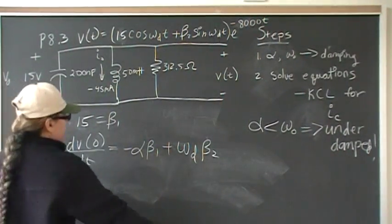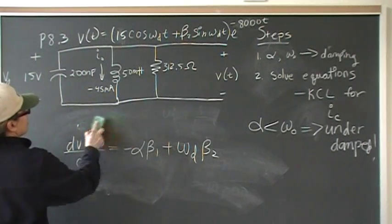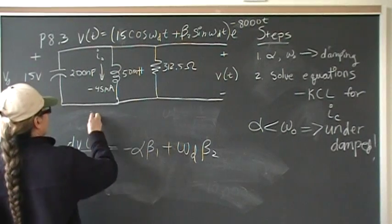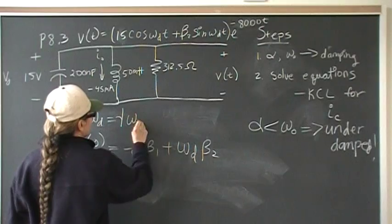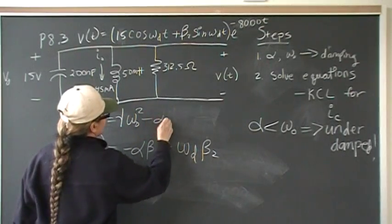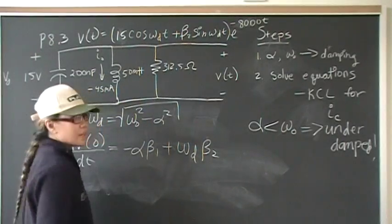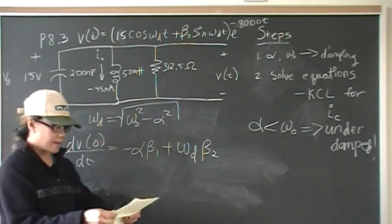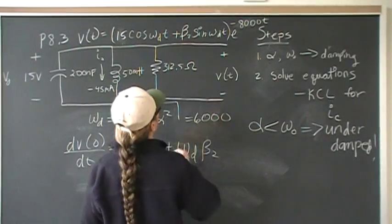Omega d is pretty easy, so that's just going to be the root of omega naught squared minus alpha squared. That's going to be the 10,000 squared minus 8,000 squared, and that's going to be 6,000, just what you should get.